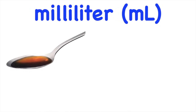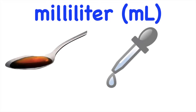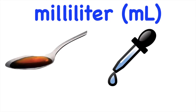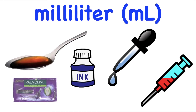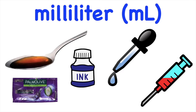Let's have some examples of containers that can hold small amounts of liquid, measured in milliliters. We have a teaspoon, a dropper, a small bottle, a syringe, and a sachet. These are some examples of containers that can hold small amounts of liquid.